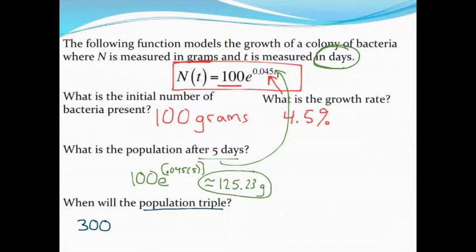So let's plug in 300 for our final weight of this population. Then let's rewrite my function: 100 times E raised to the 0.045 times T. Well, since I'm trying to solve for T, I could do this with a graph, but I think right now I want to solve algebraically. It shouldn't be too bad to do. So I'll start by dividing both sides by 100. 300 divided by 100 gets me 3.